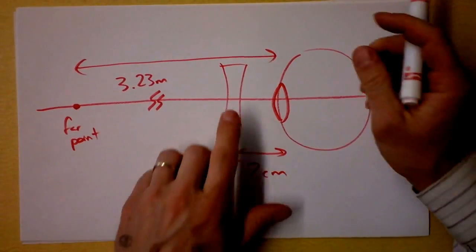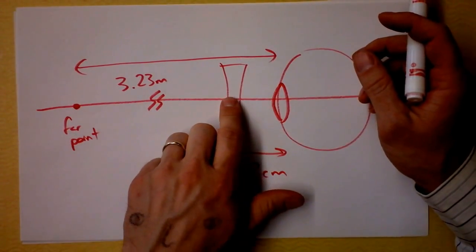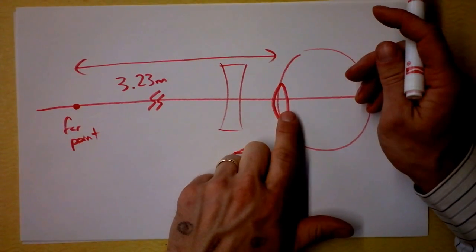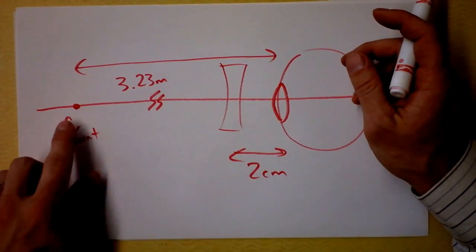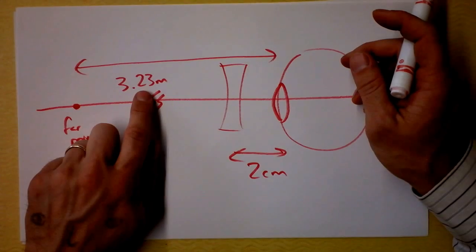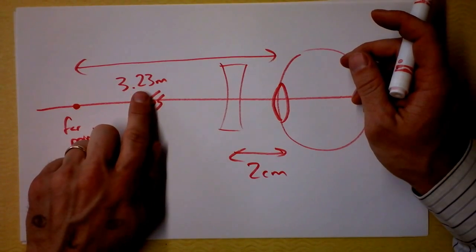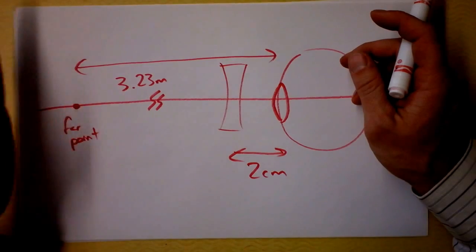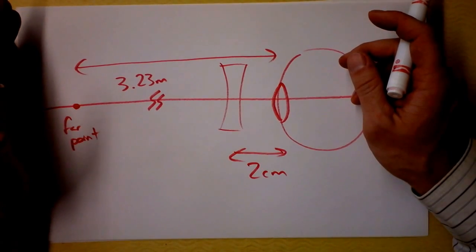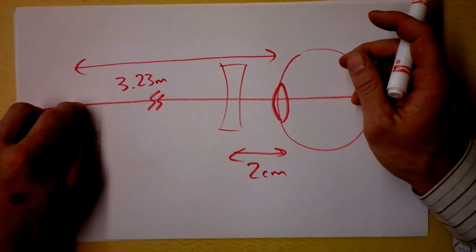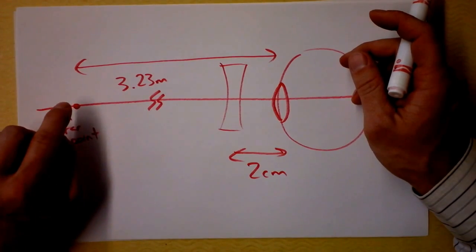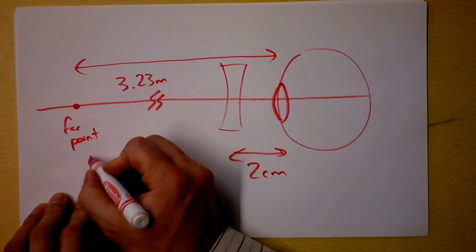So the question is, what does this lens have to do to make you be able to focus at something that's infinitely far away, even though the farthest thing you can see is at 3.23 meters from your eye? What we need is we need to move objects that are at infinity, actually freaking at infinity. We need to move their images, boom, right smack to the far point. Now, they're not going to be as big. The necessary thing is they're not going to be as big. But we can use the thin lens equation.